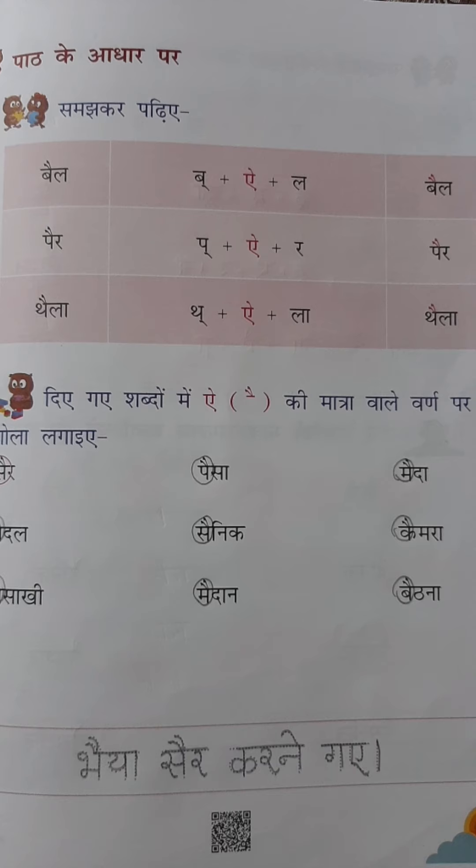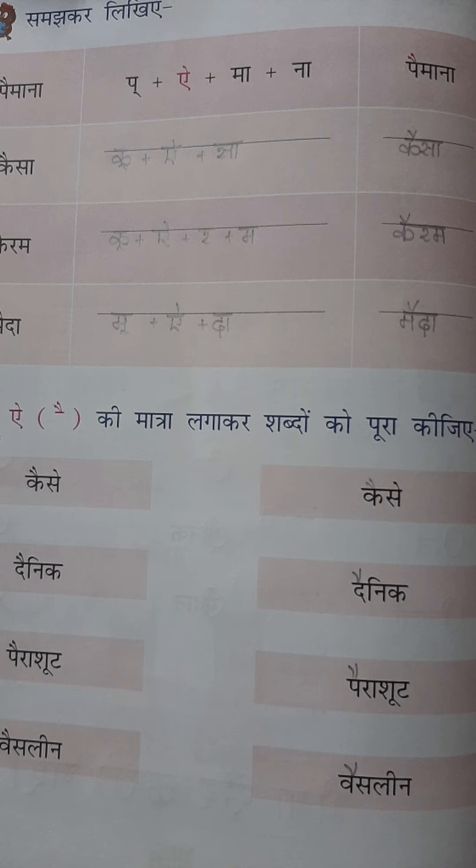In the next page you can see, Samachkar likhye. Diye gaye shabd hain: Paimana, Kaisa, Kairam and Maida. Down to that, Pura ki jiye: Diyal kaise, Dainik, Parachute, Vaseline.